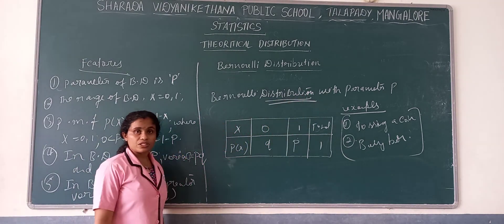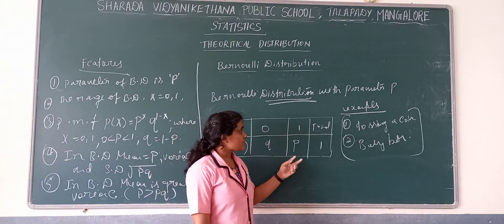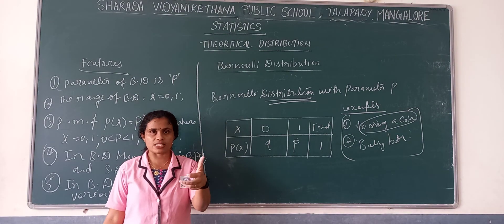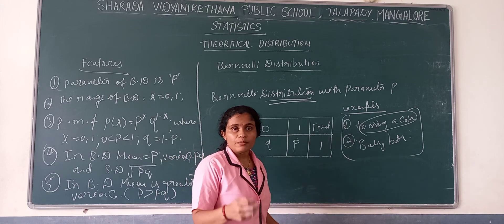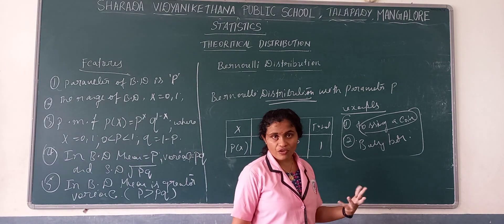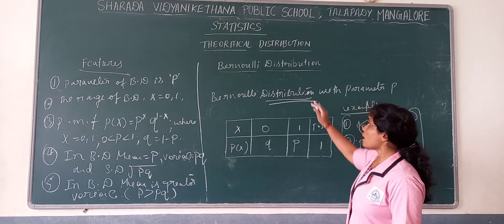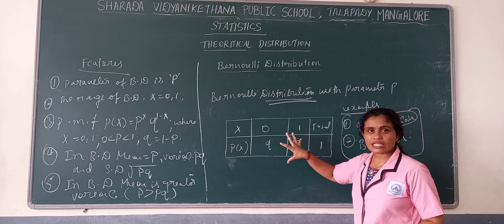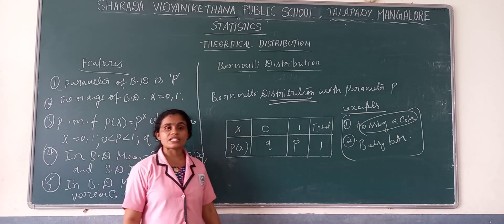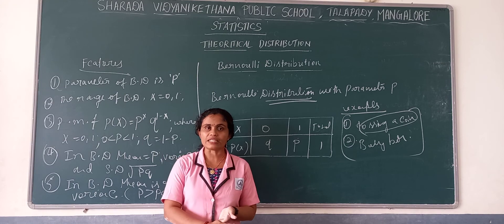Another concept is Bernoulli trial. Bernoulli distribution means tossing a coin once. Bernoulli trial means tossing a coin a number of times. These are the theoretical aspects of Bernoulli distribution. It is very easy compared to other distributions — only one and two mark questions are possible here. Next we will see the practical problems possible in this chapter.